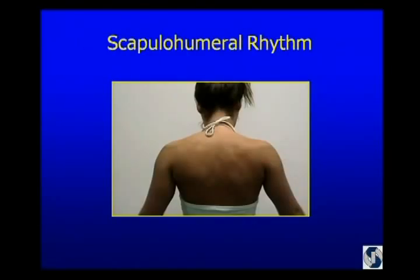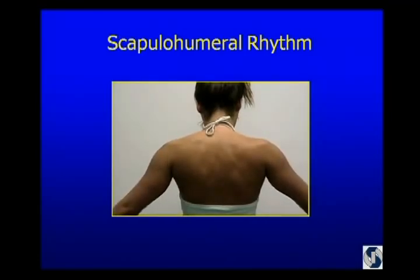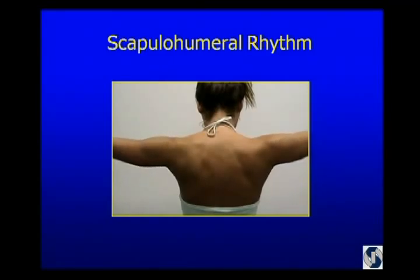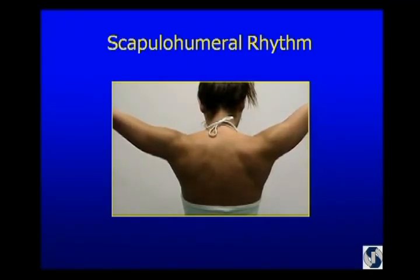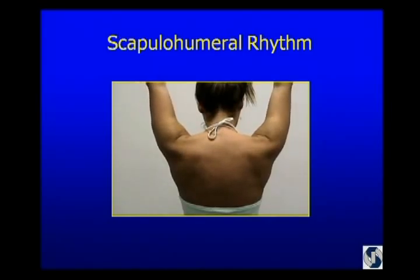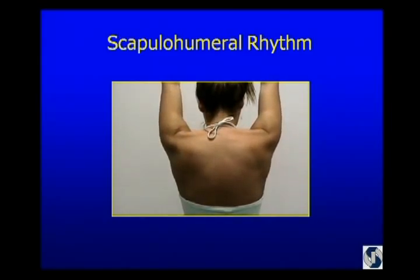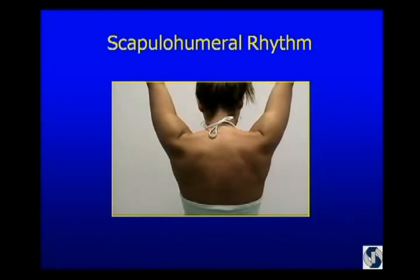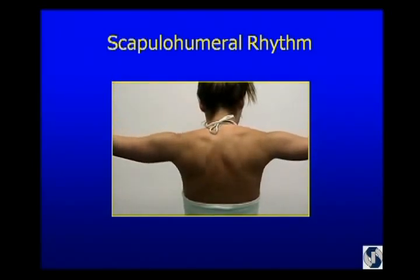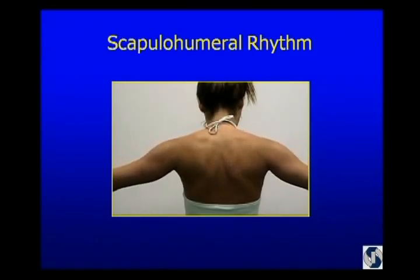Then we want to look at scapulohumeral rhythm. Here's a young lady — she's a water polo player with a SLAP lesion. That's her only pathology; I know that because I scoped her shoulder. This is just abduction. If you looked at her from the front and never from the back, you would say her range of motion was pretty good. She has to make a little move to get up into elevation. But watch what she has to do to clear the pathology in order to get her arm to come down. That's significant scapula dyskinesis.